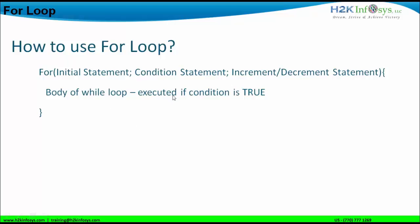As we have discussed, the first looping will happen where the initial statement will be checked with the condition. If the condition is true, the body part of the for loop will get executed for the first time. If the condition is false, the compiler will terminate the for loop. For the second looping and onwards, the first thing that happens is the incrementation or decrementation. The incremented or decremented value will be checked with the condition. If true, the body executes; if false, the compiler terminates the for loop.